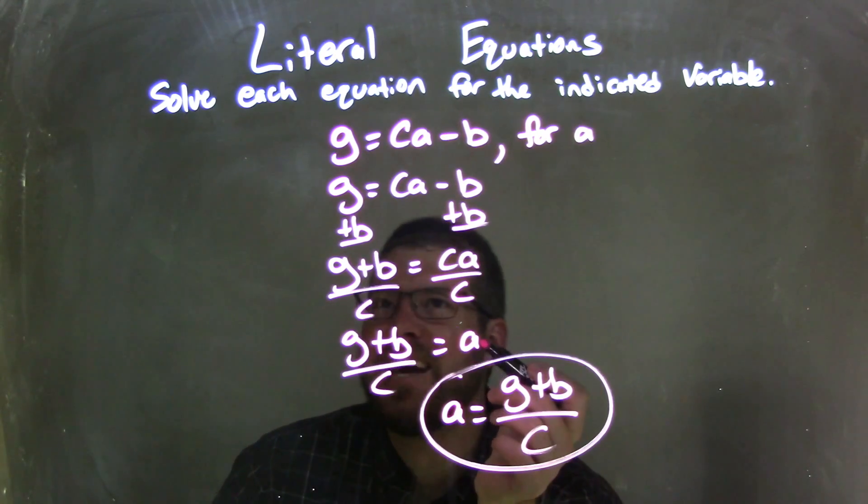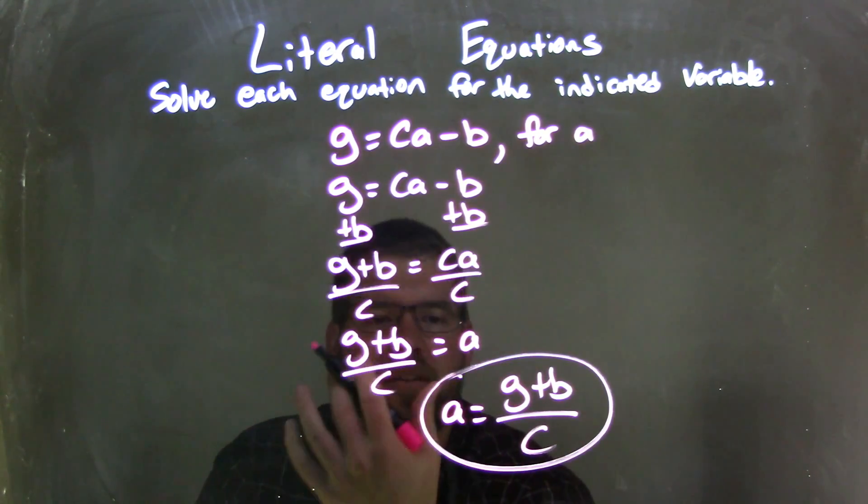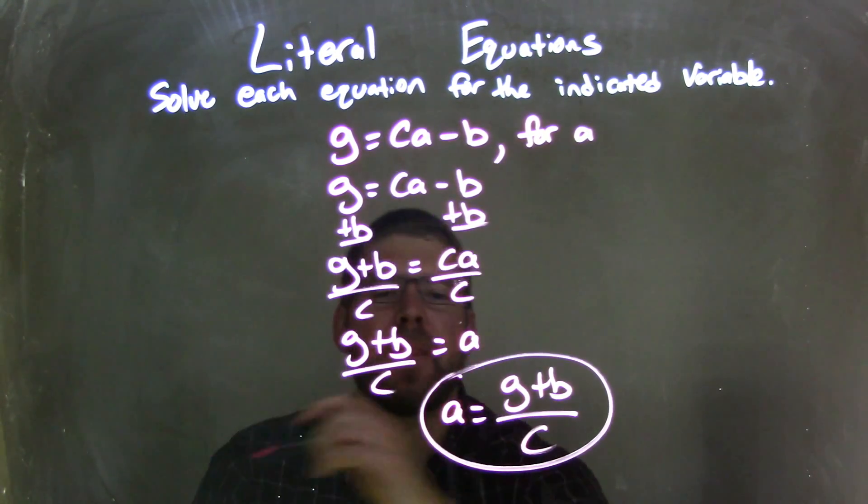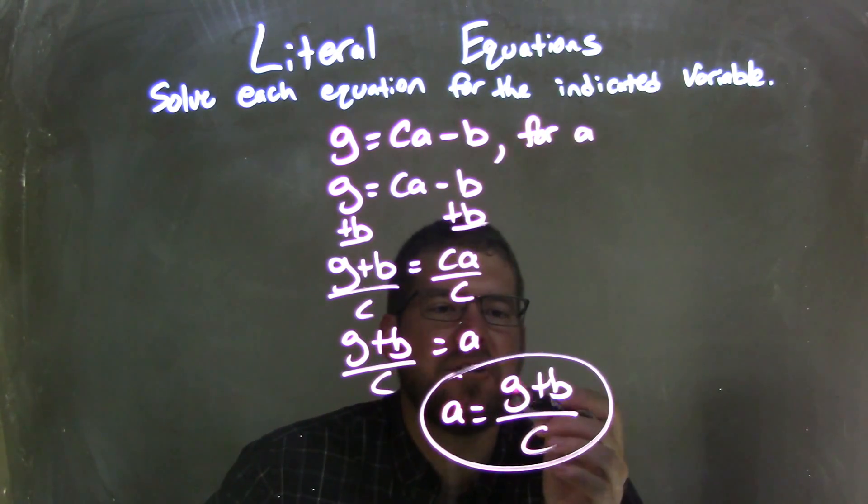We're basically done. A is isolated. So I'm going to rewrite this, and A comes first because that looks nice and neat. And so our final answer here is A equals G plus B all over C.